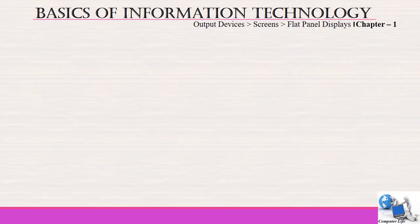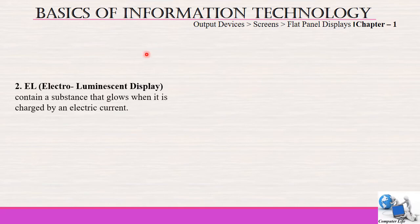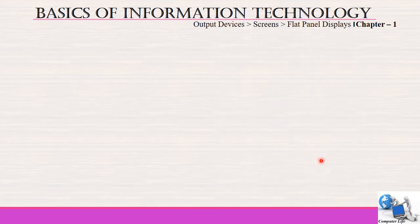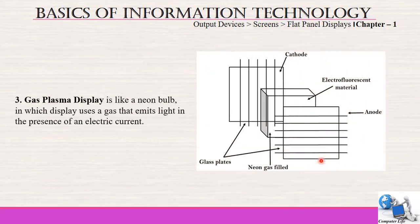The next type of flat panel display is electroluminescent. It contains a substance that glows when charged by an electric current. When power is given to the computer system, the cell produces an electroluminescent image through a filter and CCD camera, and then we can see an EL image on the screen. The next type is gas plasma, which is like a neon bulb in which the display uses a gas that emits light in the presence of an electric current. Electrofluorescent material is filled with neon gas that helps produce an image on the screen.